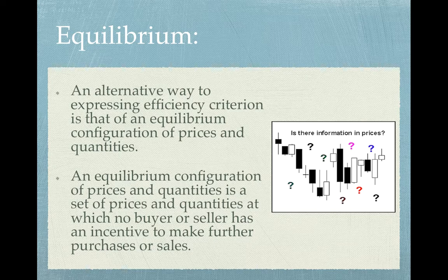It turns out that thinking about equilibrium is an alternative way to express efficiency. An equilibrium configuration of prices and quantities is a set of prices and quantities at which no buyer or seller has an incentive to make further purchases or sales.